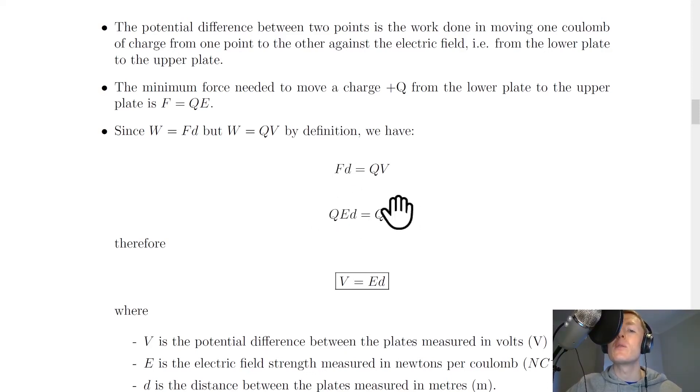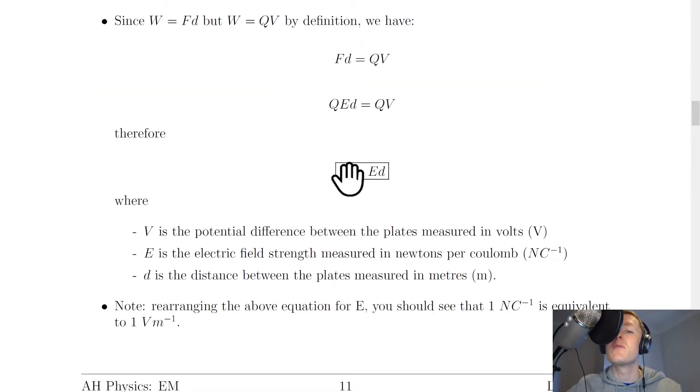So we've got qed equals qv, and you'll notice that the charges on both sides can cancel out to give us an expression in terms of v, e, and d. So we've got v equals ed.